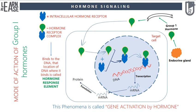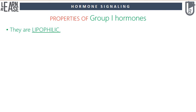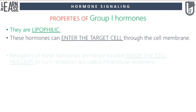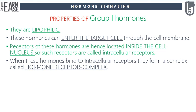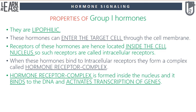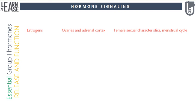Now I will summarize the properties of Group 1 hormones. They are lipophilic, so they can enter the target cell through the cell membrane. Receptors for these hormones are therefore located inside the cell nucleus and are called intracellular receptors. When these hormones bind to intracellular receptors they form a hormone-receptor complex inside the nucleus, which binds to the DNA at the hormone response element and activates transcription of genes.